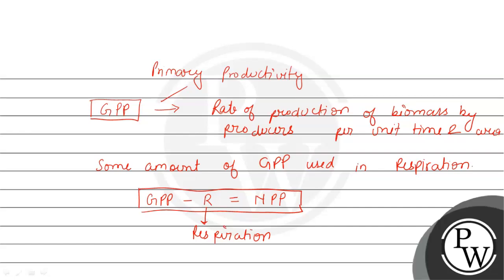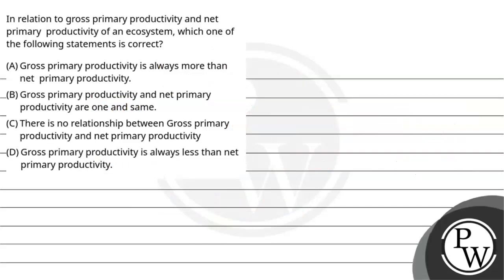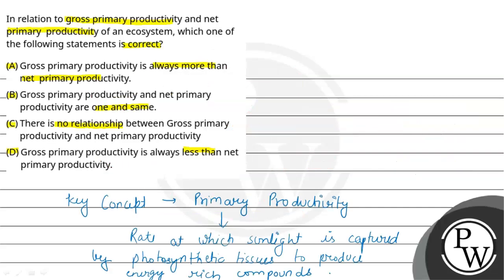So I can say that GPP will always be greater than NPP. Let's get back to the question — the correct statement to choose is: gross primary productivity is always more than net primary productivity. So the correct option will be A. I hope you understood the concept. Thank you.